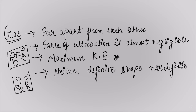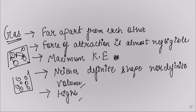To differentiate: solid particles have definite shape and definite volume; liquid particles do not have definite shape but have definite volume; gas particles neither have definite shape nor definite volume. Gases also have wide spaces between particles and are highly compressible — this is another major difference between the particles of solid, liquid, and gases.